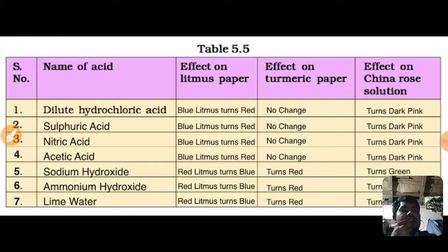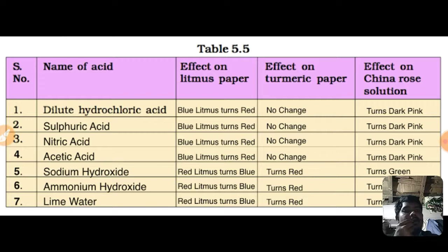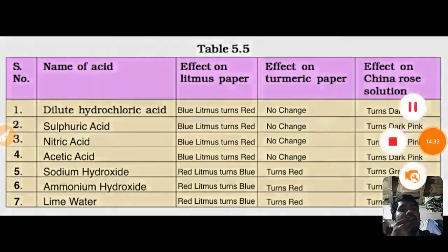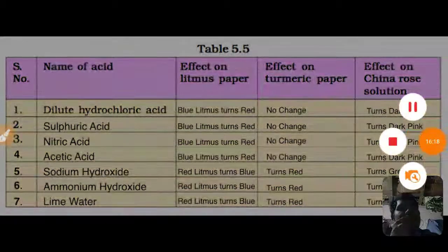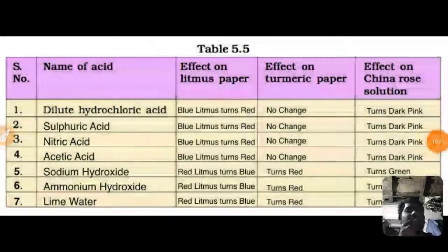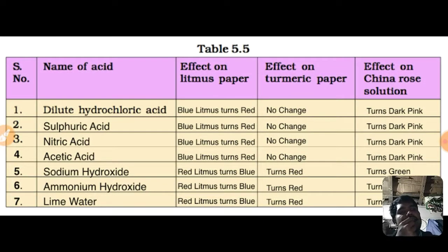We have discussed all the indicators and how they are helpful for determining whether a substance is acidic or basic, without testing by our mouth. By adding the indicator and observing the color change we can determine the nature of the substance.